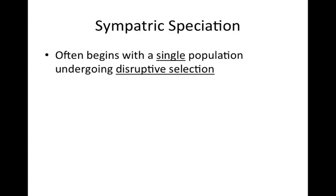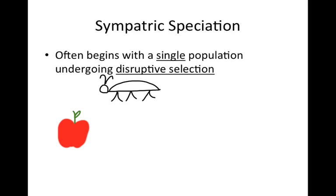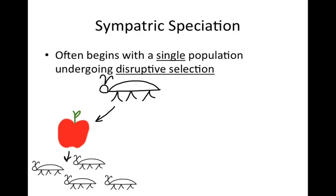Sympatric speciation can often begin with a single population undergoing disruptive selection, just like with adaptive radiation. If you're an insect that selects its mating location based on the smell of a particular fruit or plant where you were born, you're only going to mate with others born on that particular plant. A parent insect may select that plant, lay their eggs, and more members of that species will come back there and mate and lay eggs there.